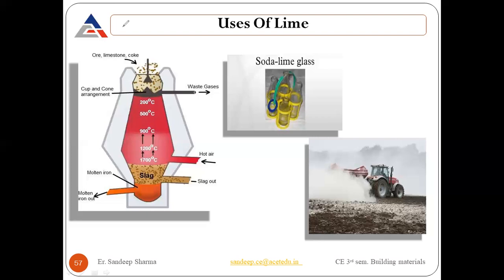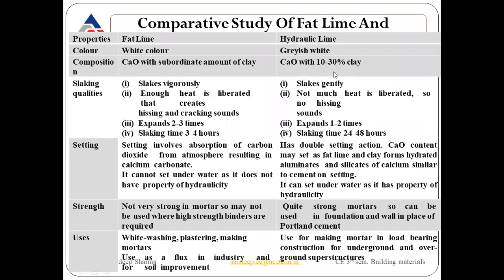Soil stabilization means we want to change the properties of a material by mixing it with another material. For example, on one side we test natural soil, and on the other side when we add some content of lime in the soil and check those properties, there will be a difference between the properties of the natural soil and the stabilized soil. Soda lime glass can be made using lime as previously discussed, and lime can also be used for agriculture purposes.